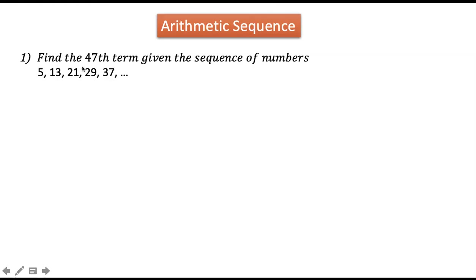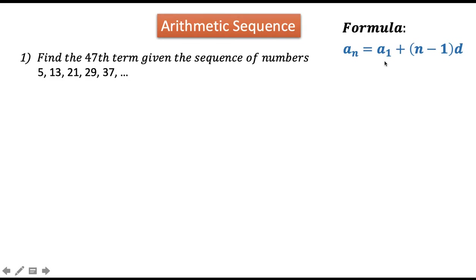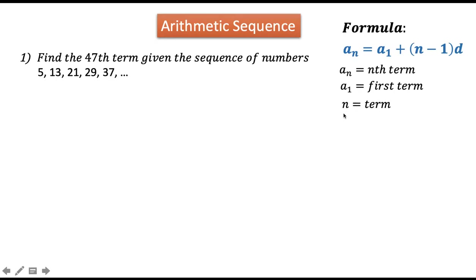Let us take this given example: find the 47th term given the sequence of numbers 5, 13, 21, 29, 37. We can solve this using the formula a sub n equals a sub 1 plus quantity n minus 1 times d, wherein a sub n represents the nth term, a sub 1 is the first term, n is the term position, and d represents the common difference.